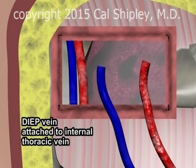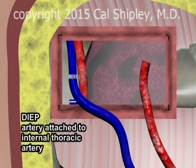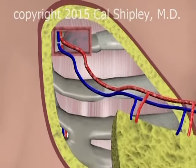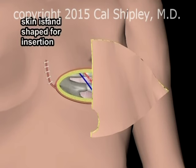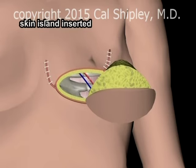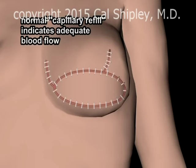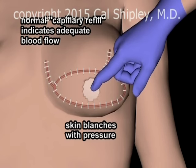The deep inferior epigastric artery and vein are now attached to the corresponding internal thoracic artery and vein. Breast bleeding from the tissue of the skin island indicates a successful anastomosis or connection between the arteries. The skin island is then shaped and attached to the surrounding tissues. Normal capillary refill, as evidenced by blanching of the skin and then return of color with finger pressure on the newly inserted skin island, indicates adequate arterial blood flow.